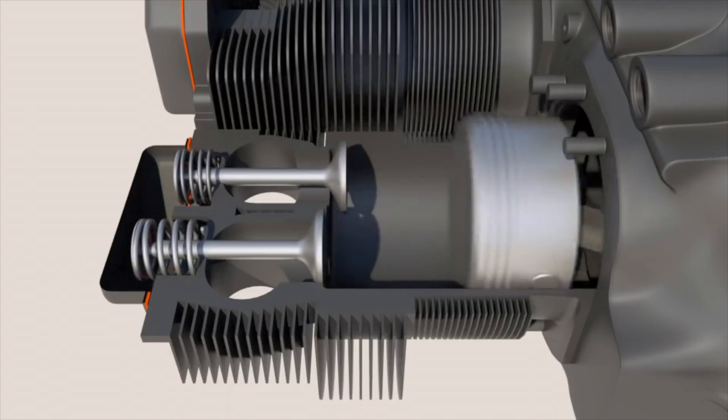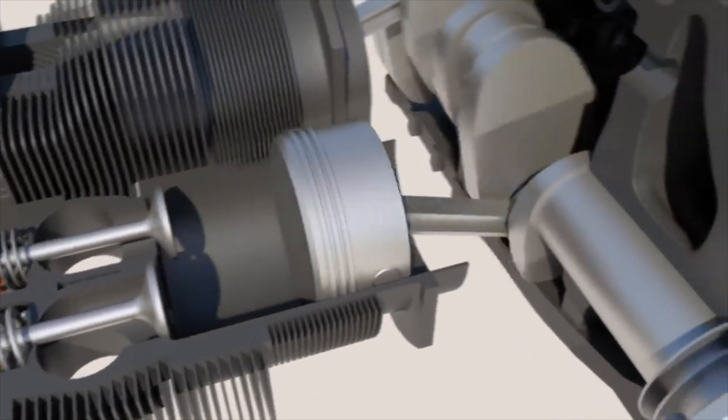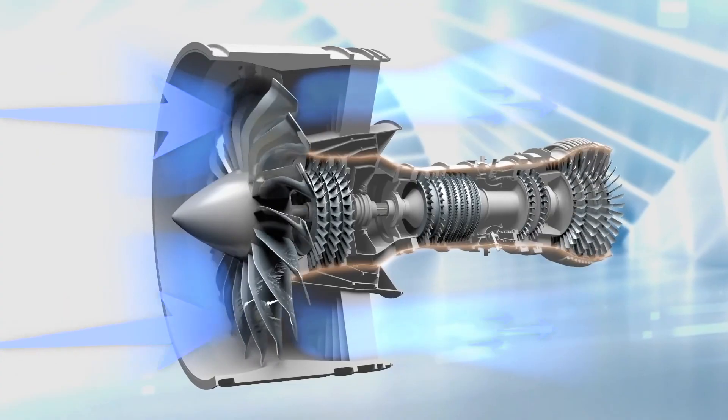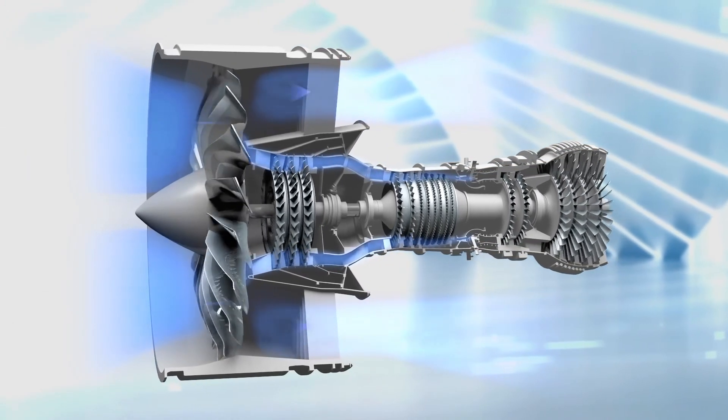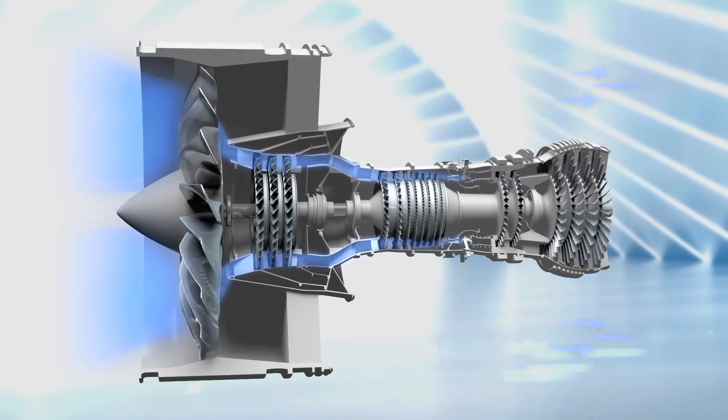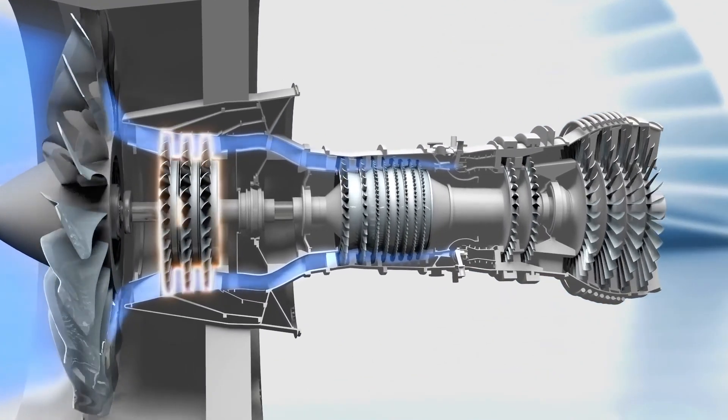Using our bobsled analogy and combining it with the piston engine we can start to create a clearer picture in our minds. What confuses most people when trying to understand the concept of a jet engine is that we look at the flow of air through the engine in a linear way. And while this is the case, it pays to understand the components and stages of operation first.